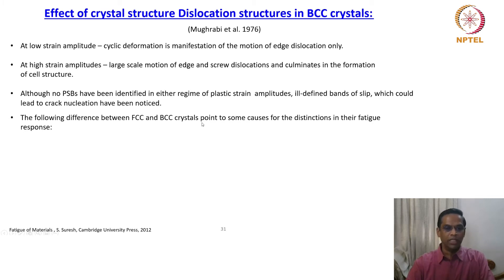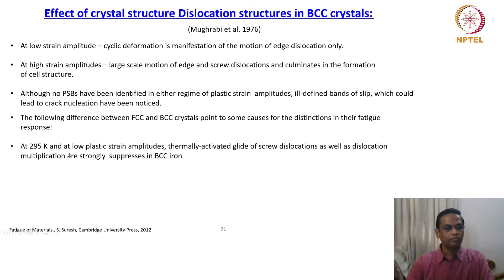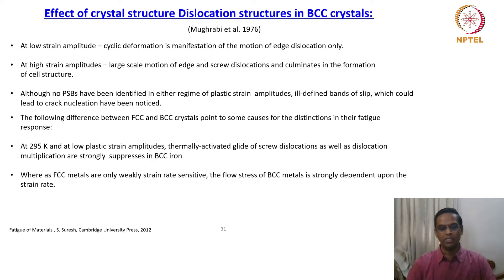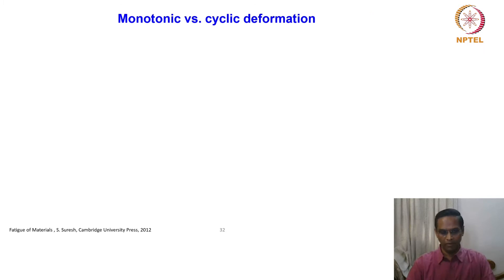The key differences between BCC and FCC crystals point to distinctions in their fatigue response. At 295 K and low plastic strain amplitudes, thermally activated glide of dislocations as well as dislocation multiplication are strongly suppressed in BCC iron. Whereas FCC metals are only weakly strain-rate sensitive, the flow stress of BCC metals is strongly dependent on strain rate. The dislocation substructure that develops in BCC is quite different from FCC — that is the bottom line. Features like PSBs which we have never seen in monotonic loading appear only because of fatigue.